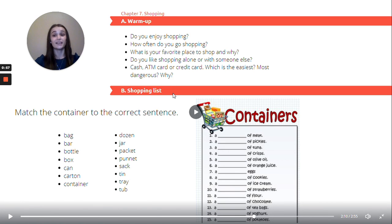So for our next exercise, we have a shopping list. But the shopping list is incomplete. We have to pick the container that the product comes in and complete the sentences. Let's have a look. Sentence number one. A of meat. We're going to have a look and that would be a tray of meat.